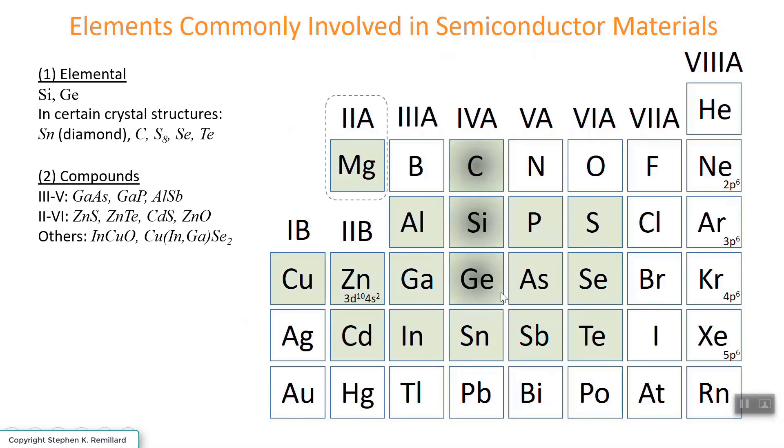And then there are emerging materials, such as indium copper oxide and copper indium gallium selenide, which goes by the colorful nickname CIGS. These are useful in photovoltaic applications.